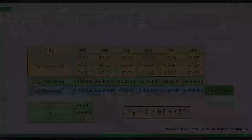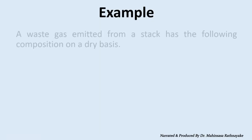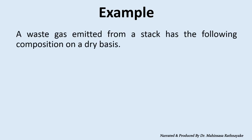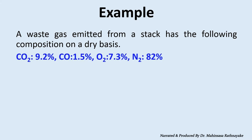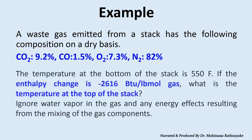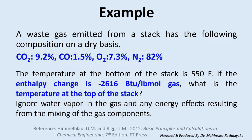Let's see one more example to use Microsoft Excel in enthalpy calculations for a mixture. A waste gas emitted from a stack has the following composition on a dry basis. The temperature at the bottom of the stack is 550 degrees Fahrenheit. If the enthalpy change is minus 2616 BTU per pound mole of gas, what is the temperature at the top of the stack? Ignore water vapour in the gas and any energy effects resulting from the mixing of the gas components.